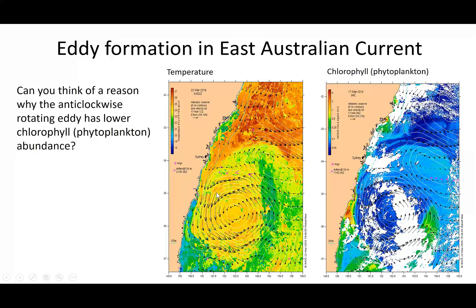Here's an example on the east Australian coast — this shows the southern end of the current coming down the coast near Sydney, then it peels away and breaks up into eddies which rotate and spin slowly down the coast. Because we're in the southern hemisphere, the Coriolis deflection is to the left, so as the eddy spins, water is deflected towards the central axis creating convergent flow and downwelling in the center, resulting in a warm core eddy.